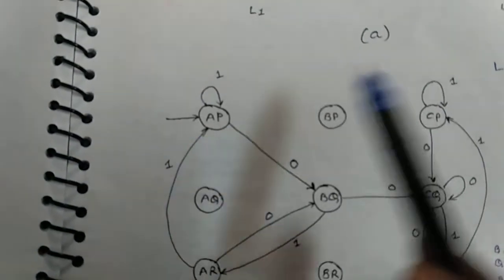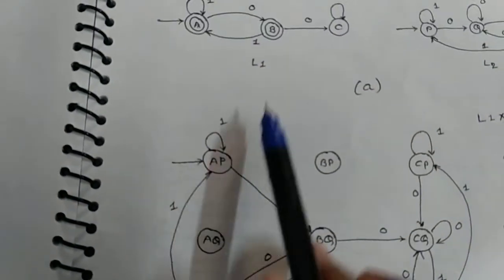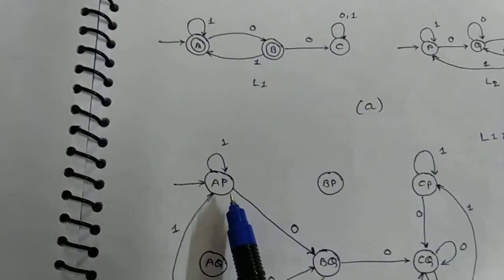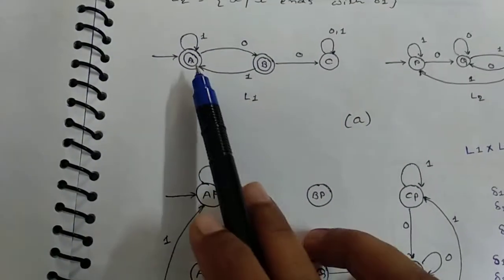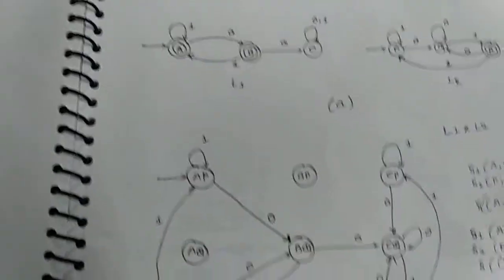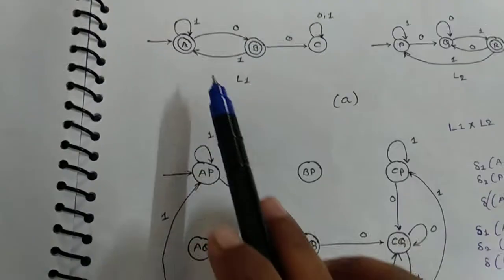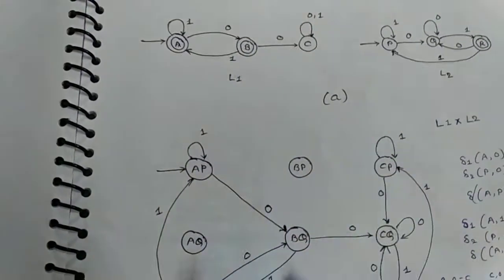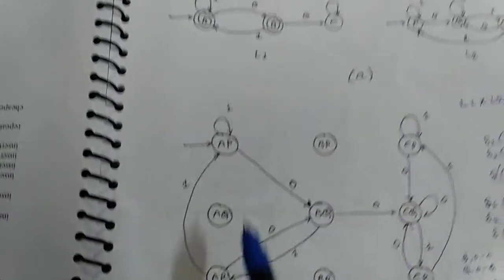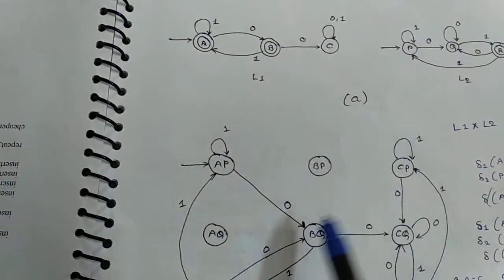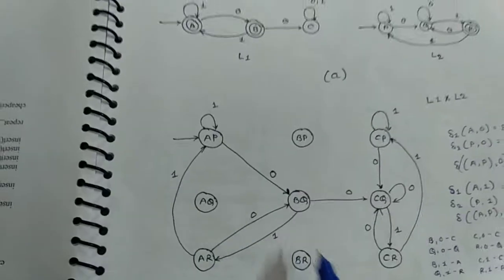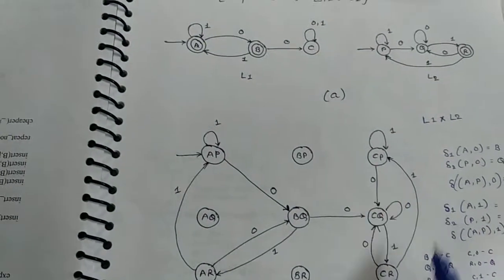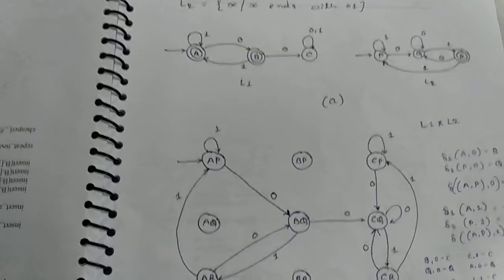So we draw this type of automata. A is combined with P, then state is AP. A is combined with Q, then state is AQ. A is combined with P, B is combined with P, state BP, BQ, BR, CP, CQ and CR.